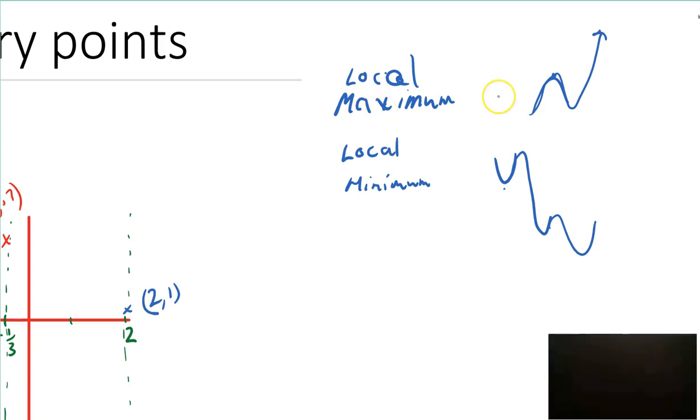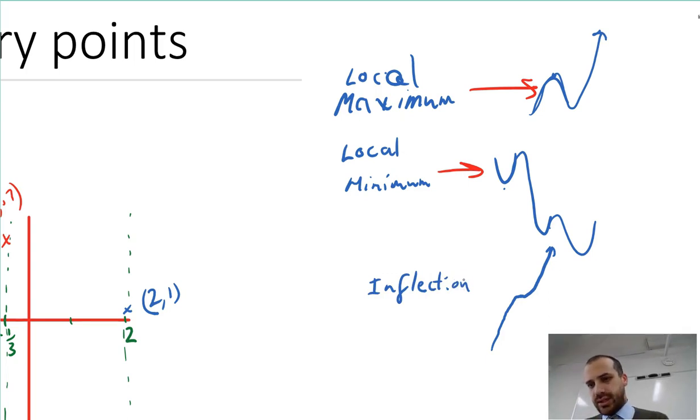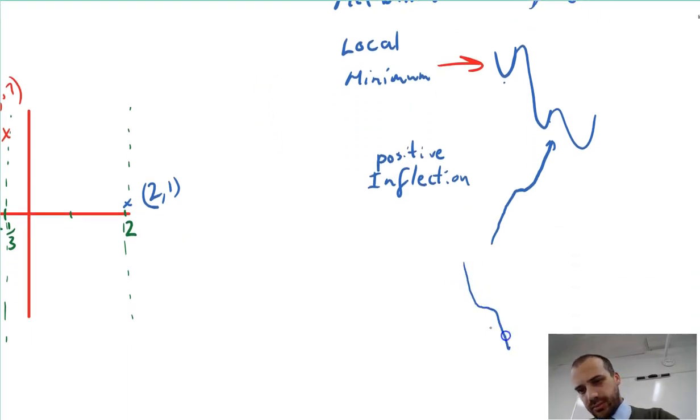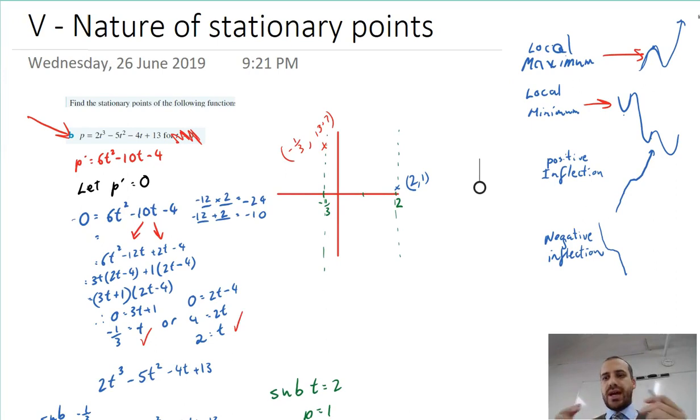The other thing that we could have are called inflection points. An inflection point looks like this, going up, stopping for a brief second and moving back up, it's like a slight stop and then continue onwards. We can have inflection points that look like that, called a positive inflection point, or we can have inflection points that look like that, called a negative inflection. There are four different types of turning points.